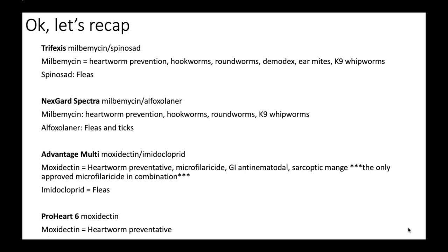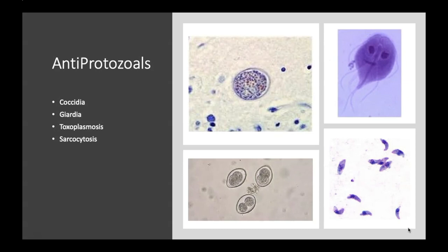What you need to know: you may be able to memorize all of these products, but more ideal is to get to know the themes within the classes of drugs — what they're able to prevent. Most avermectins and milbemycins are used for heartworm prevention as well as general antinematodal action. Group them together, and then for any specific drug you can pull out its particular effects.